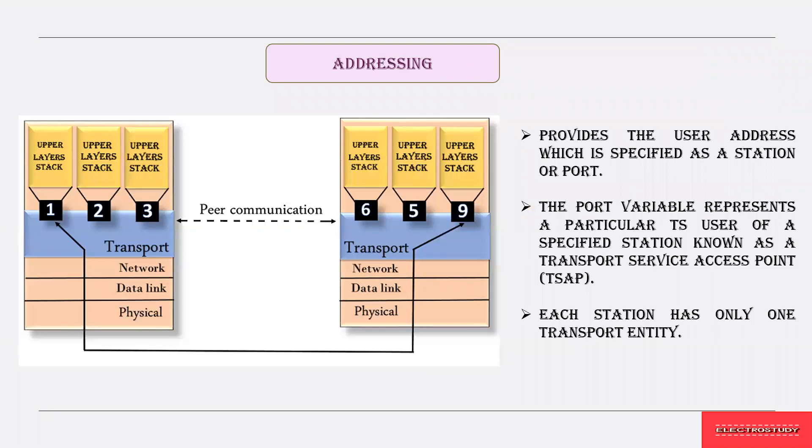Addressing provides an address to each and every packet in the system, which may be an IP address. For communication, you have a port number — for example, port numbers like 123659 are mentioned. This port number represents a particular service used by the server and is called the Transport Service Access Point (TSAP). This is the point where peer-to-peer communication takes place, and each station will have only one transport entity, ensuring all packets are addressed through the TSAP.